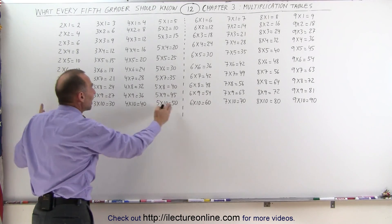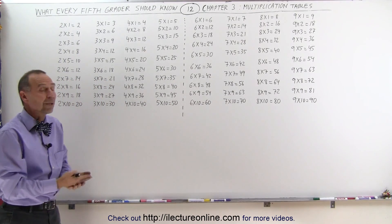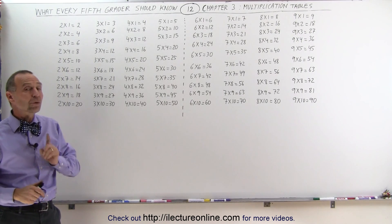So you can see that the first four tables, multiply times 2, multiply times 3, times 4, times 5, they're fairly easy to remember. Now let's go to the more difficult ones.